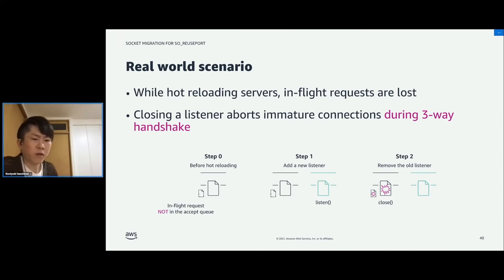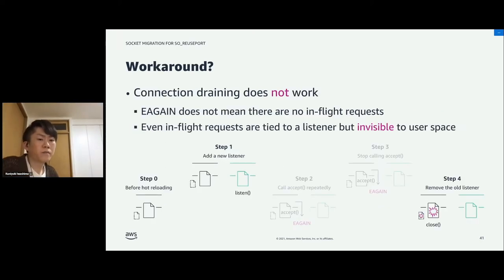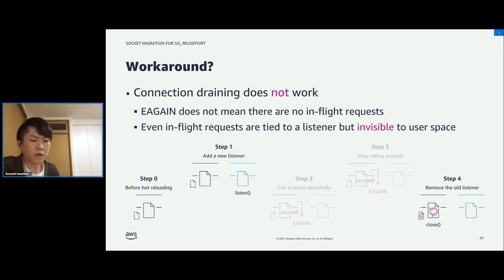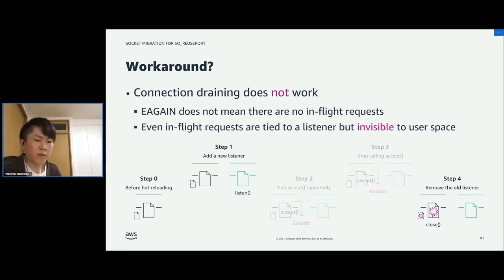This situation also happens when we lose server processes. The difference from Quiz 1 is that before closing the listener, there is a pending request that has not completed the three-way handshake. In this case, connection draining does not work, because the pending request during the handshake is not in the accept queue, so we cannot know of its existence via the accept system call. But as we can see from Quiz 2, the pending request actually seems to be tied to a specific listener. And if we close the listener, the request is aborted. Thus, even if we confirm EAGAIN, when we close the listener, invisible connections can be lost silently.